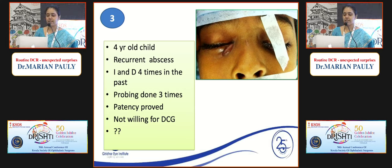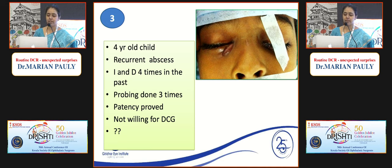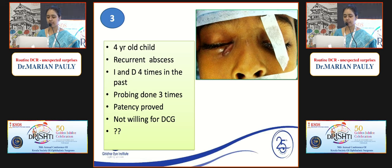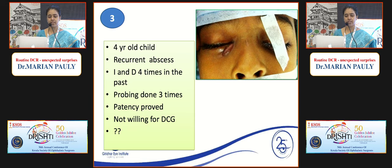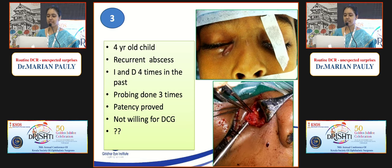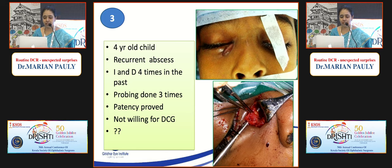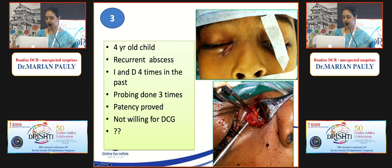A four-year-old child presented with recurrent lacrimal abscess, having already undergone incision and drainage four times and probing two or three times elsewhere, with parents repeatedly saying syringing was patent. Posted for probing, syringing, plus/minus DCR with consent obtained. Intraoperatively, this was a case of lacrimal sac diverticulum - rarely seen, but repeat incision and drainage with patent syringing should make you think of this. The sac diverticulum was entered, DCR was performed, and the child did well.